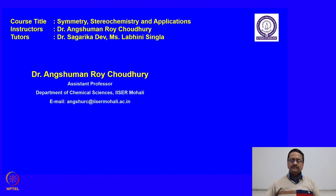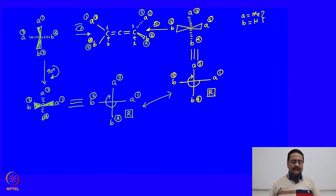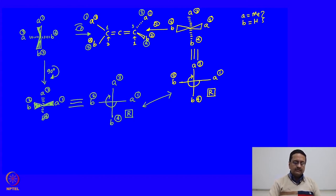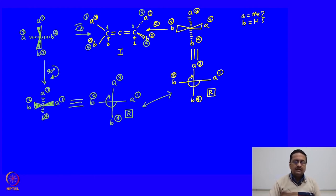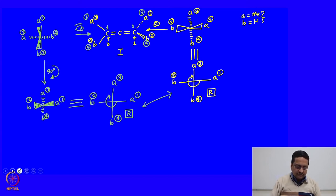In the previous lecture we were discussing about the stereochemistry of allenes, and in that we discussed the R and S nomenclature of substituted allenes. We discussed the stereochemistry of this compound, let us call it compound number 1. Now let us take the mirror image of this compound in the next slide and try to write down the corresponding R and S notations for that mirror image.